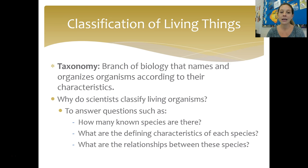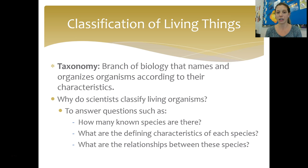Let's start by talking about the why. The science we're dealing with when talking about classification of living things is called taxonomy. This is the branch of biology that names and organizes organisms according to their characteristics. We classify for a lot of reasons, but three of the big questions we're trying to answer are: how many known species are there, what are the defining characteristics of each species, and what are the relationships between these species.